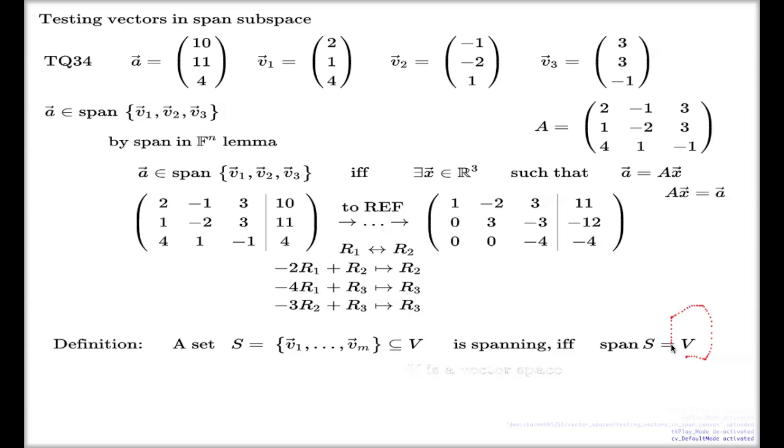So any vector can be represented as a span of the elements of my set. If this is the case, the set is called spanning. V here is a vector space.